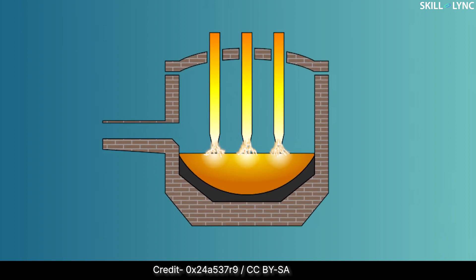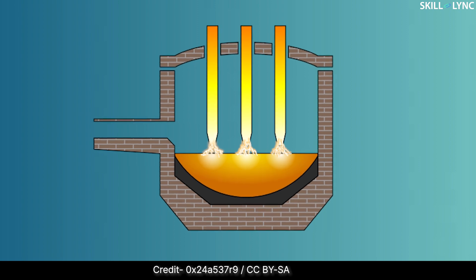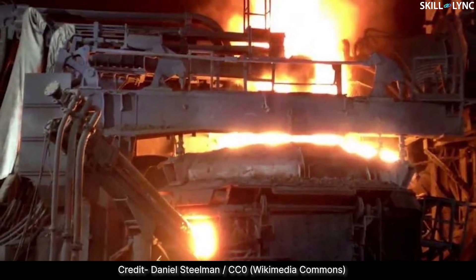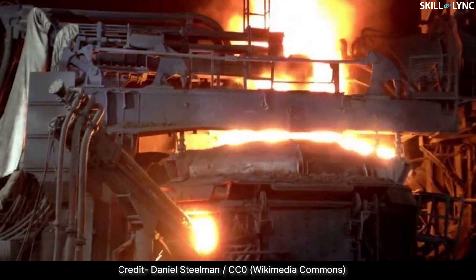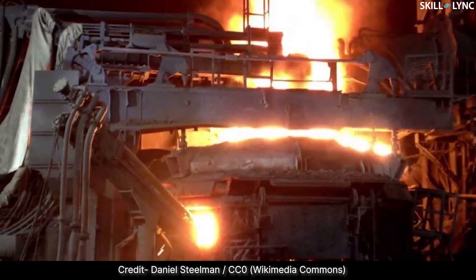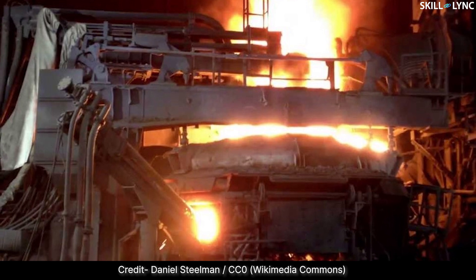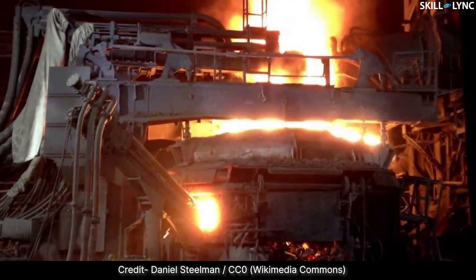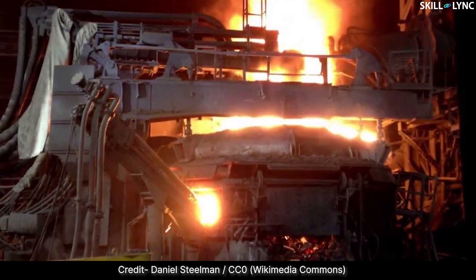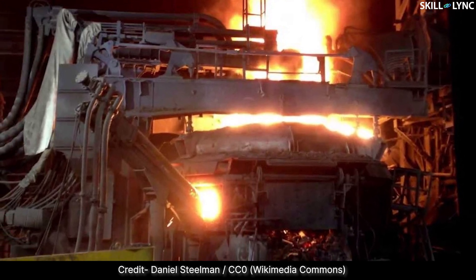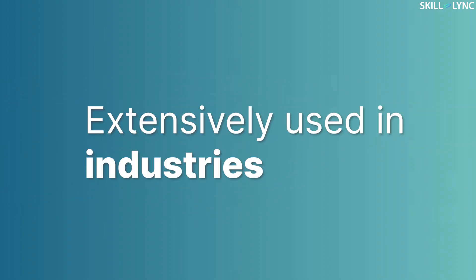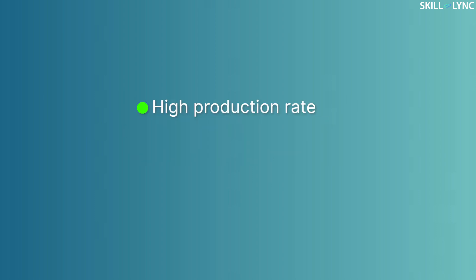Through the open roof, metal scraps are dropped into the furnace along with a small amount of carbon and limestone. Then the roof is closed and the electrodes are lowered. The power is switched on and the temperature is allowed to increase. Within two hours of heating, the furnace reaches enough temperature to melt the metal. The power is turned off, the electrodes are lifted, the roof is opened, and the furnace is tilted to pour the molten metal into a ladle.